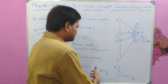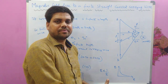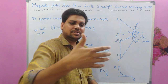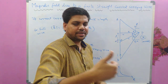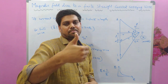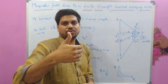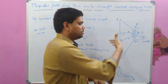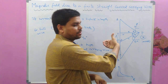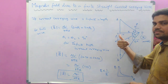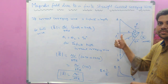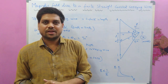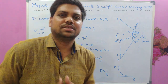For the direction of the magnetic field in this case as well, use the right-hand rule: the thumb represents the current direction and your four fingers represent the magnetic field direction. So I hope you have understood. Thank you for watching this video.